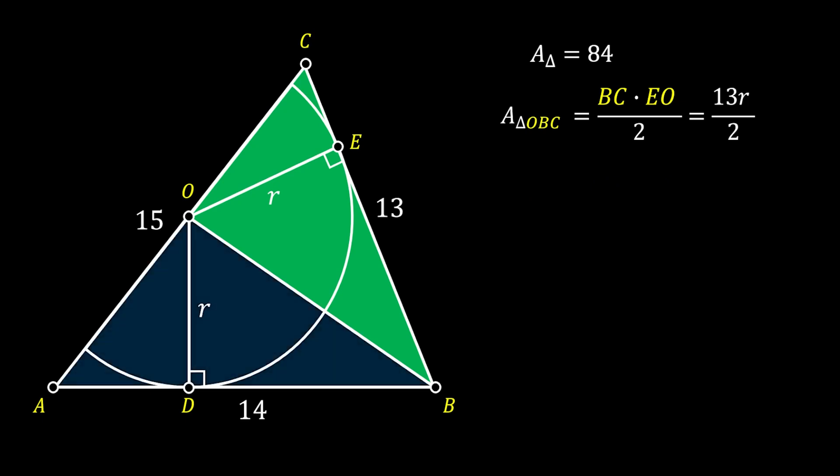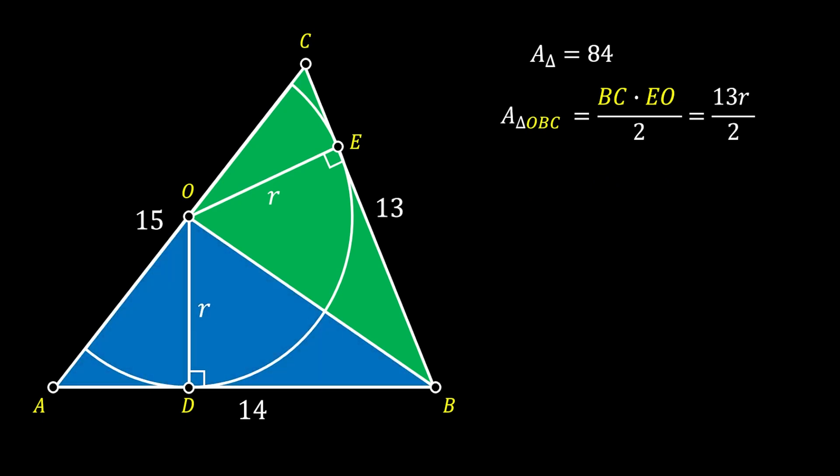Now, we will do the same for the other triangle OBA. We will again find the area of this triangle as the product of its base and height divided with two. And if we substitute our values, we will get that that is equal to 14R over two.